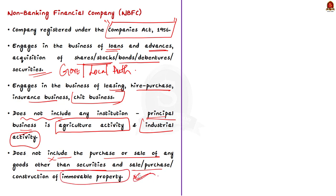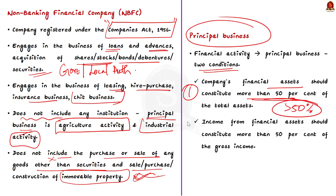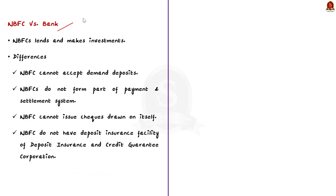Any financial activity to be considered as a principal business should satisfy two conditions. The first condition is that a company's financial assets should constitute more than 50% of the total assets. Now let us see how NBFCs are different from banks. NBFCs lend and make investments, activities similar to that of banks; however, there are a few differences between them.